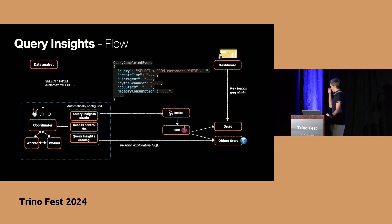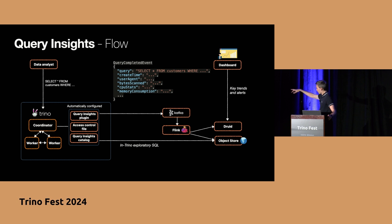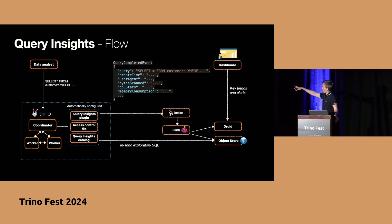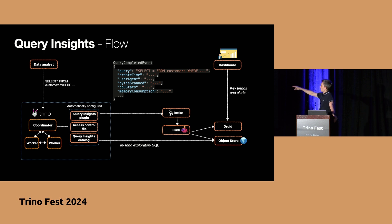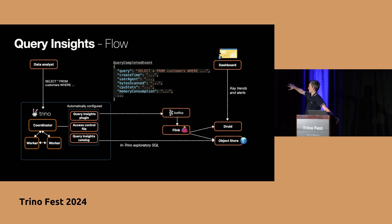Here's the flow of how it works. On the left-hand side, a typical data analyst submits a query to the Trino cluster. The Trino cluster executes the query and returns the result. But we also automatically configure, whenever we bring up a Trino cluster for a customer, this Query Insights plugin along with some other things. The Query Insights plugin takes the query completed event JSON — which contains all that rich metadata — and sends it to our central Kafka cluster. All Trino clusters are doing this for every query they execute.